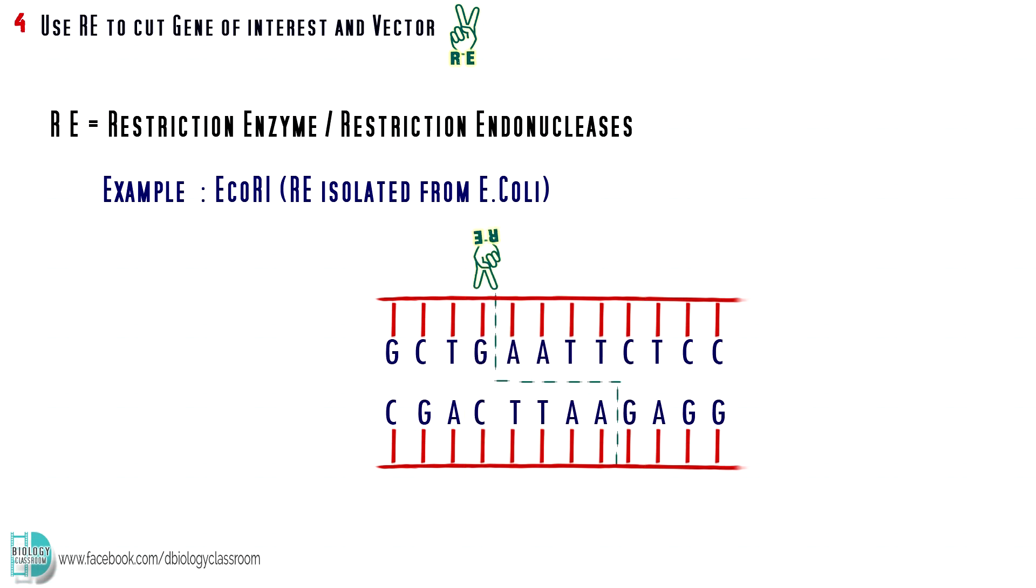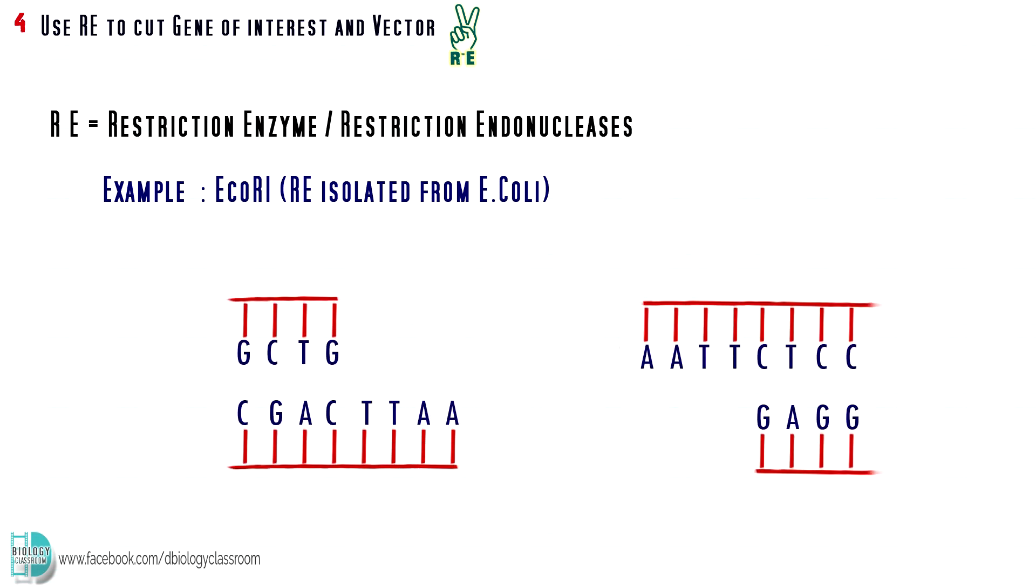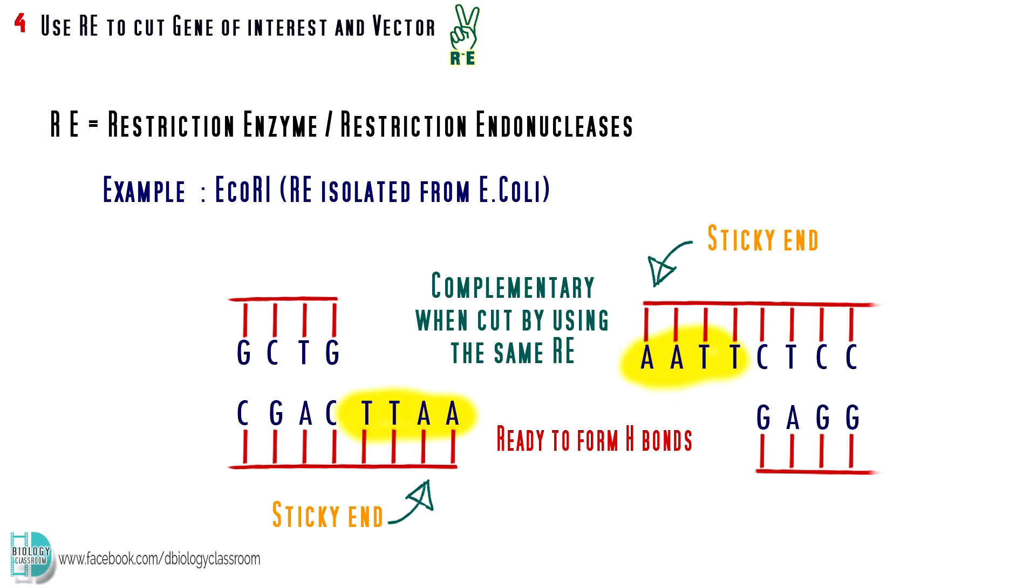When the gene of interest and plasmid are cut by using the same restriction enzyme, they will have sticky ends that are complementary to each other. They are called sticky ends because they are ready to form hydrogen bonds with each other.